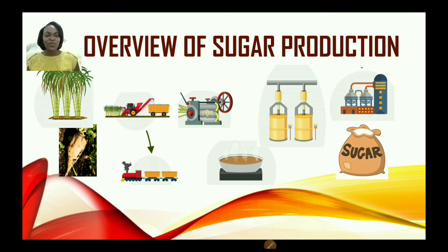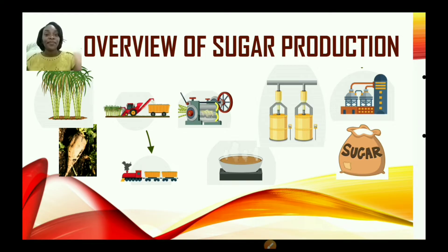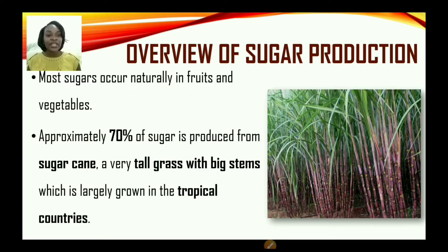Overview of sugar production. Most sugars occur naturally in fruits and vegetables. Approximately 70% of sugar is produced from sugar cane — a very tall grass with big stems which is largely grown in tropical countries, mostly the Caribbean countries where we have nice, warm, sunny weather.